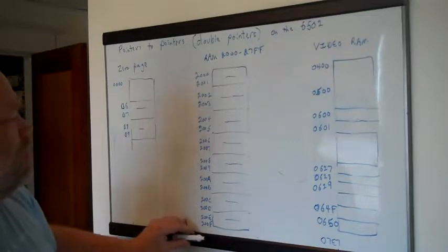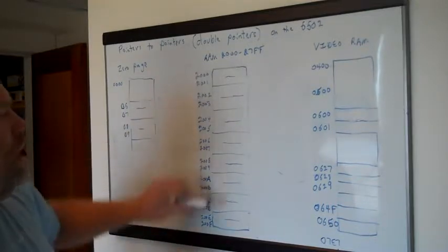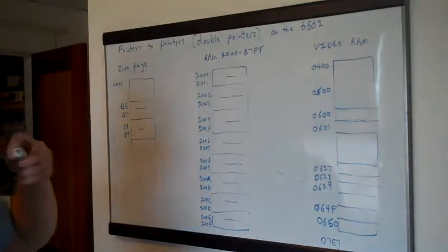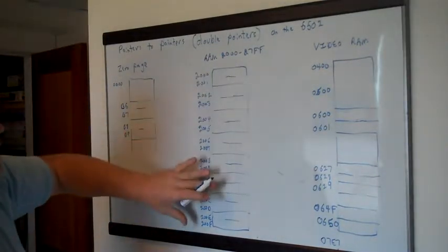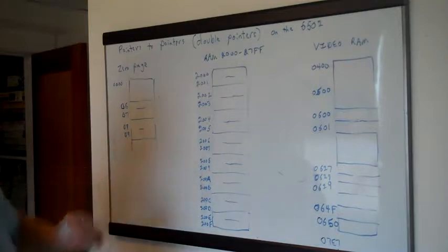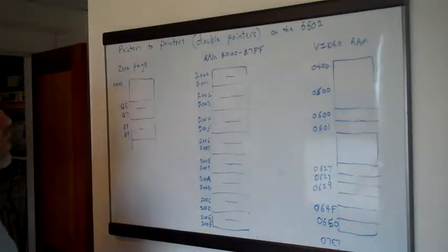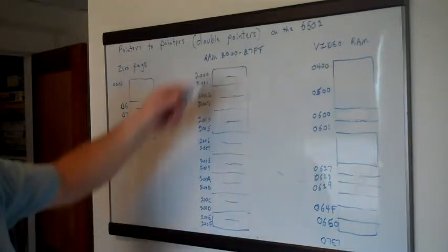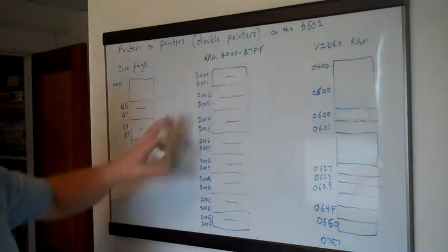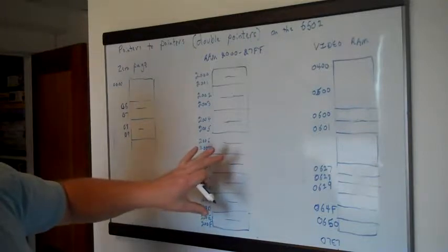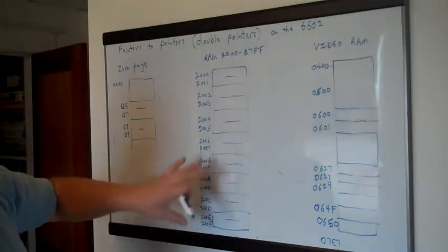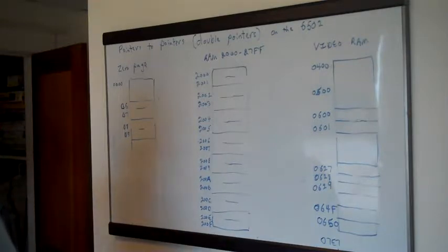We need 2,000 bytes to hold up to 1,000 pointers — one for each of the 1,000 potential screen locations the worm could travel through. I'm just showing the first 16 bytes here, which is 8 pointers, and that'll be enough for our demonstration. It can potentially run through all 2,000 bytes and then start over at the beginning — it's going to be a rolling first-in, last-out stack.